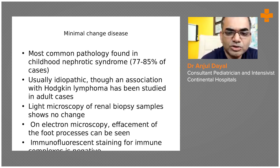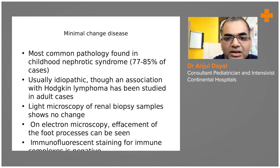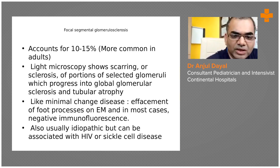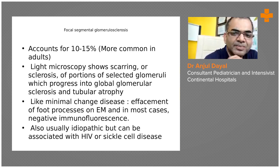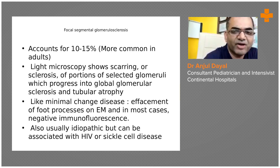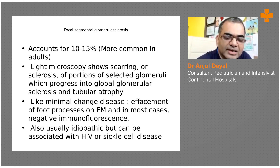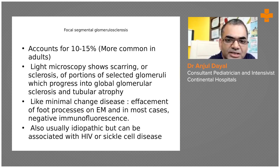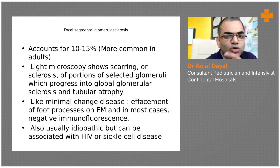The other cause commonly associated in children is focal segmental glomerulosclerosis (FSGS). This accounts for around 10 to 15% of cases of nephrotic syndrome. Together, FSGS and minimal change disease comprise around 95% of all nephrotic syndrome in children. This disease does tend to respond to steroids, but there tend to be multiple relapses, and there is a chance of these children progressing to end-stage renal disease.